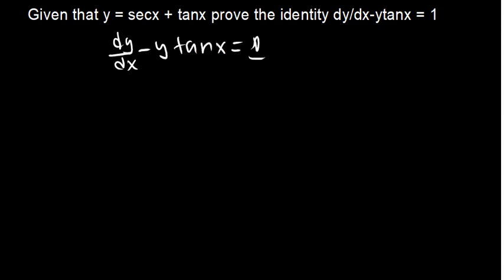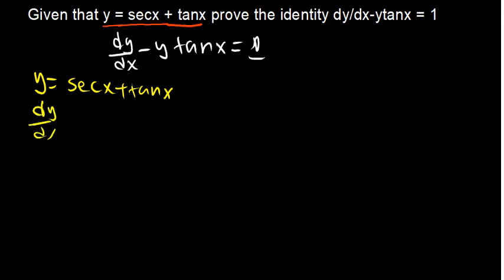We have been given the hint that the y value is sec x plus tan x. First of all, we are supposed to find dy/dx, meaning we are supposed to differentiate this function. So our function is y = sec x plus tan x. The derivative of sec is sec x times tan x, plus the derivative of tan which is sec squared x.